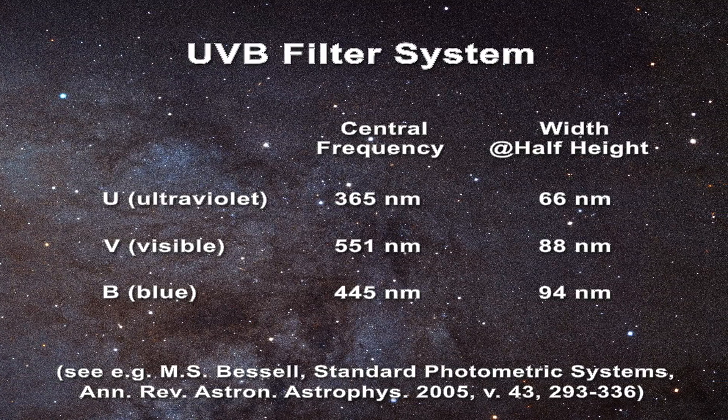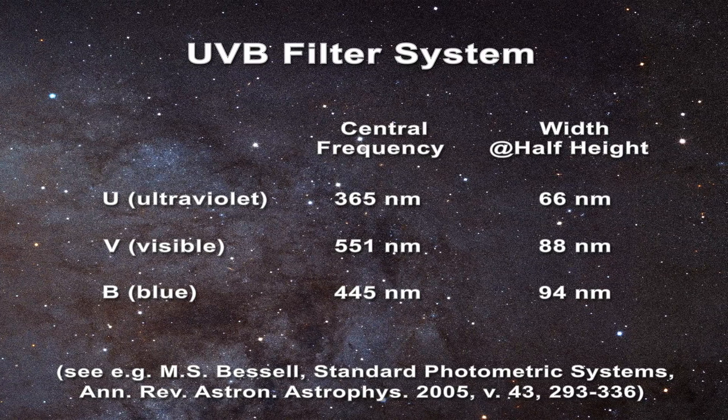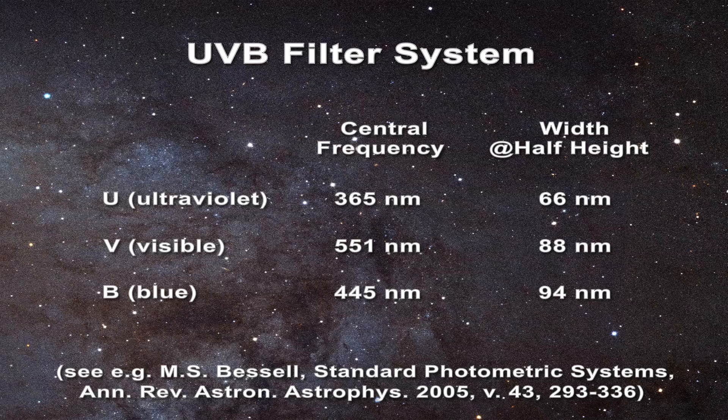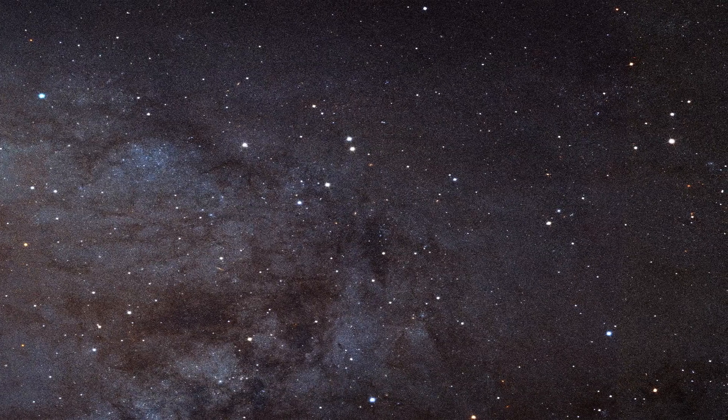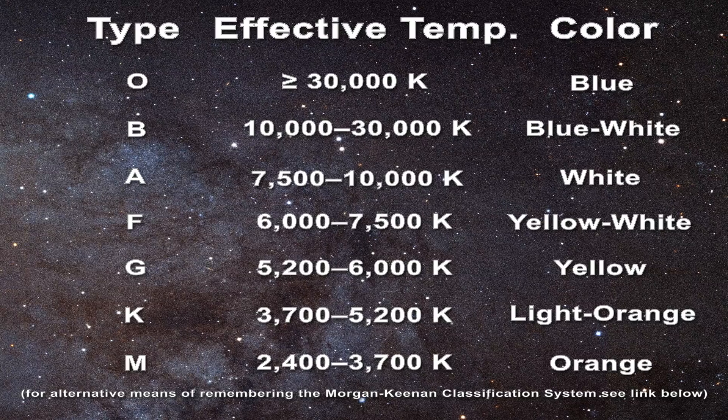Once the apparent color of a star is properly determined using the filter system, it can be classified according to temperature, as it can be seen in this table. This is referred to as the Morgan-Keenan or MK classification system. You can see the apparent temperature associated with each star type in the table.